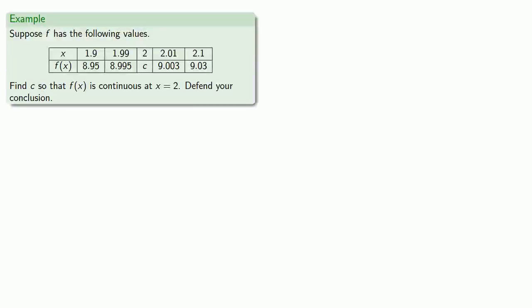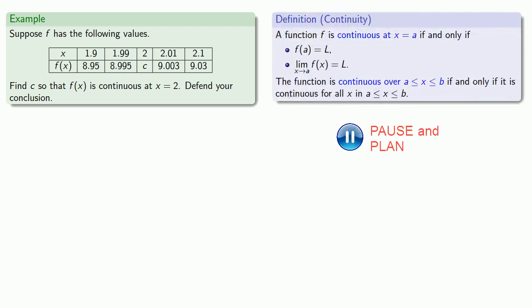For example, suppose f has the following function values. Let's find a value c that will make f(x) continuous at x equals 2. So, let's pull in our definition of continuity. And if we want the function to be continuous, we need the function value to be equal to the limit.